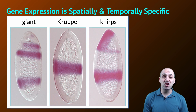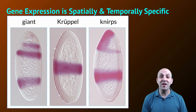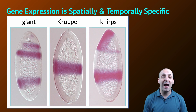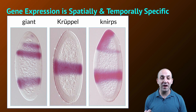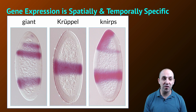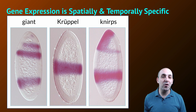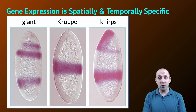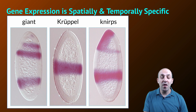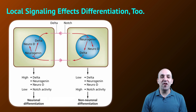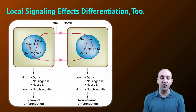Another way of putting this is that gene expression is both spatially and temporally specific. For the particular pattern of gene expression in any cell in a developing organism, it is not only dependent upon where it is in the organism, but also upon the particular time in the developmental program. As the organism continues to develop, local signals between neighboring cells will start to play big effects as well.